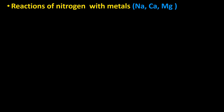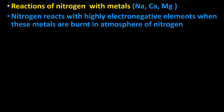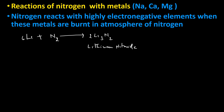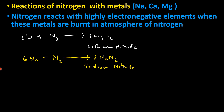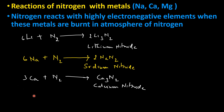Reactions of nitrogen with metals: Nitrogen reacts with highly electropositive elements when these metals are burnt in atmospheric nitrogen. When lithium is burnt in nitrogen, we get lithium nitride. When sodium is burnt in the atmosphere of nitrogen, we get sodium nitride. When calcium is burnt in nitrogen, we get calcium nitride.